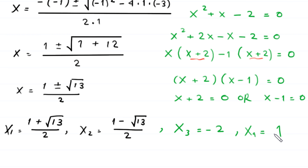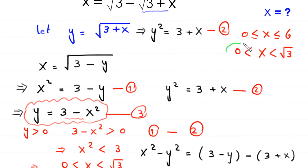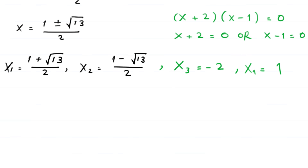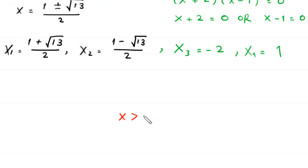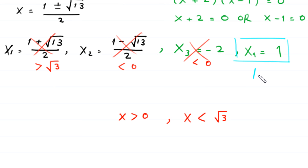Now we use the domain to remove any invalid solutions. The domain requires x greater than 0 and x less than the square root of 3. The value negative 2 is less than 0, so it is rejected. The value (1 minus √13) over 2 is less than 0, so it is also rejected. The value (1 plus √13) over 2 is greater than √3, so it is rejected too. Only x equals 1 satisfies the domain, so x equals 1 is the final answer.